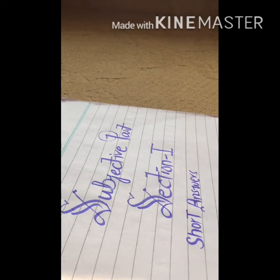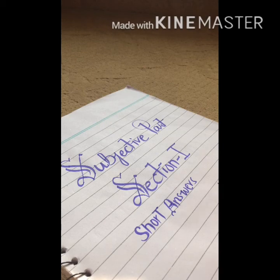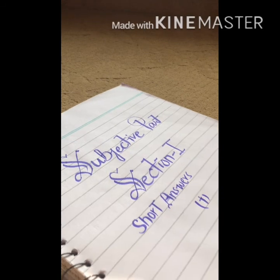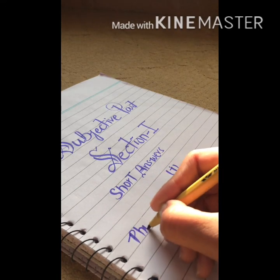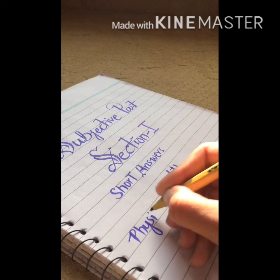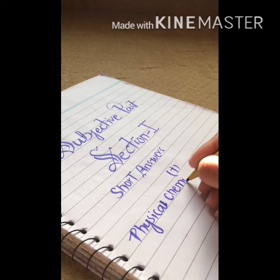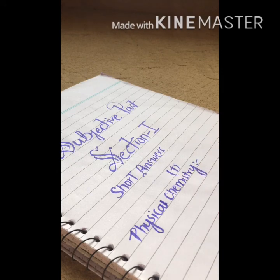Now you can start the paper easily. It is a simple and beautiful look for your paper. You can start by writing the first question number, which is part one, and then state the heading name — like I am going to write 'physical chemistry'. It is an easy and beautiful way, and you can easily get more marks by designing your paper this way.